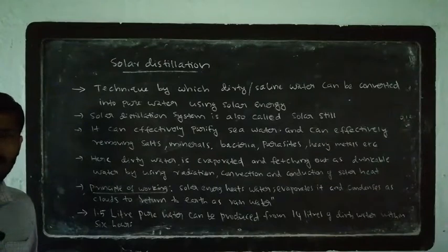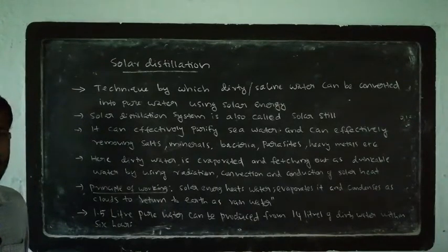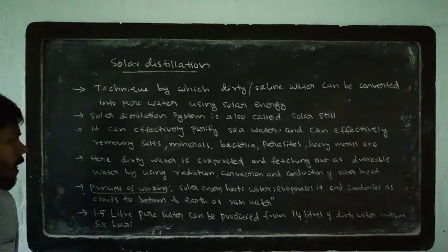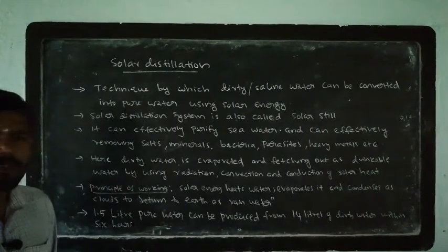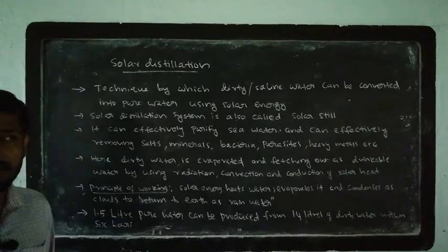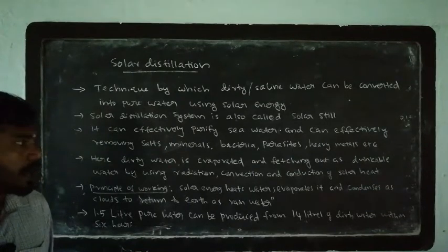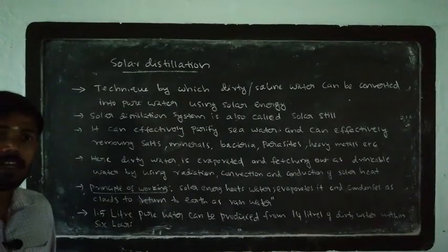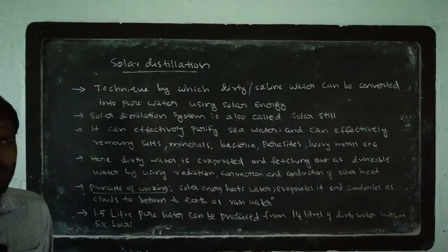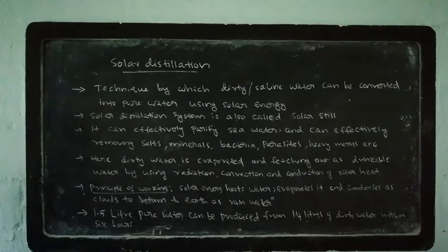How does heat transfer? When we use these processes, we use dirty water to evaporate. When we use that water to evaporate, we use condensation. We then use that water to drink. That method is solar distillation.